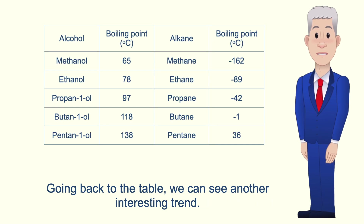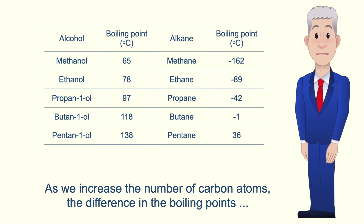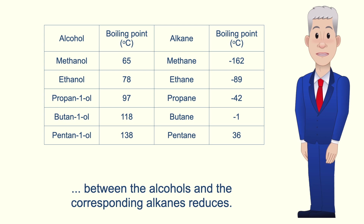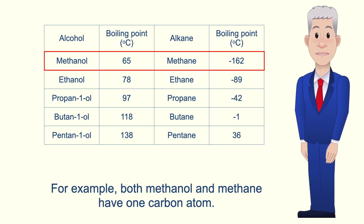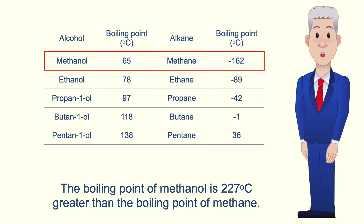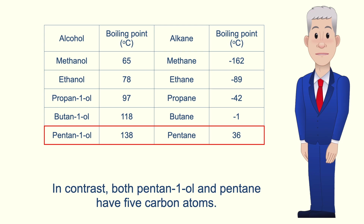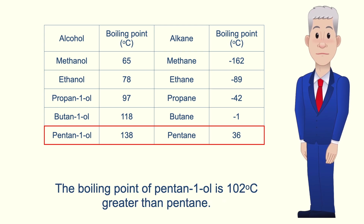Going back to the table we can see another interesting trend. As we increase the number of carbon atoms, the difference in the boiling points between the alcohols and the corresponding alkanes reduces. For example, both methanol and methane have one carbon atom. The boiling point of methanol is 227 degrees Celsius greater than the boiling point of methane. In contrast, both pentan-1-ol and pentane have five carbon atoms, and the boiling point of pentan-1-ol is 102 degrees Celsius greater than pentane.